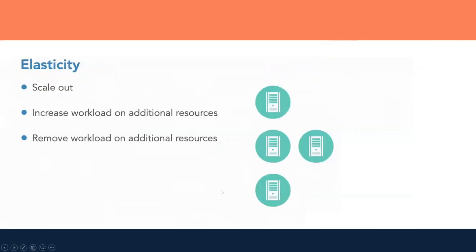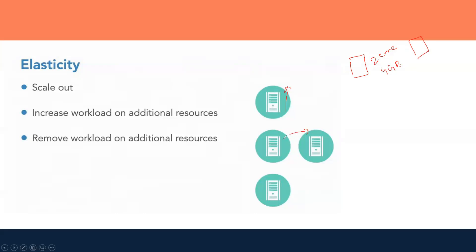Elasticity is also a benefit — if you want to scale out, you can add additional resources. For example, if you have one server with two core processor and 4 GB RAM, you can add another server with the same or different capacity. So you can not only scale up vertically — increasing resources on the same server — but also horizontally by deploying additional servers.